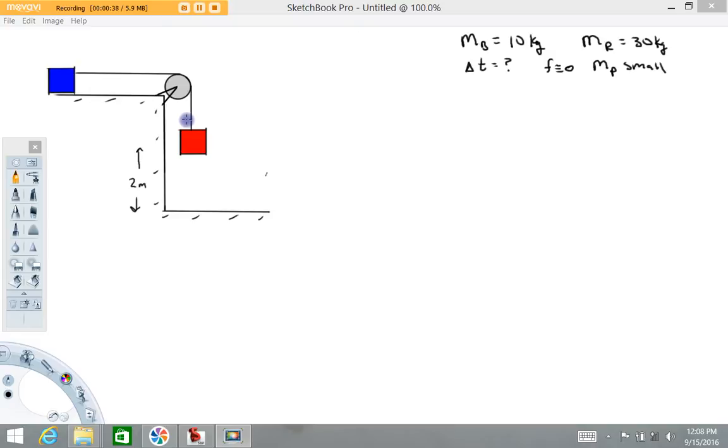Some data about the system here. The red mass starts about two meters off the ground, to the bottom of the red mass. The blue mass is going to be 10 kilograms. The red mass is going to be 30 kilograms. And what we're going to do is try to calculate the time, the delta t, it's going to take for this red mass to accelerate down and hit the ground.